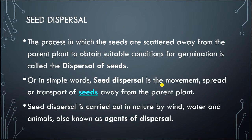Now, what is this dispersal of seed or seed dispersal? The process in which the seeds are scattered away from the parent plant to obtain suitable conditions for germination is called the dispersal of seeds. Or in simple words, seed dispersal is the movement, spread or transport of seeds away from the parent plant.